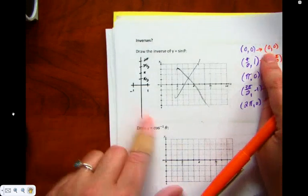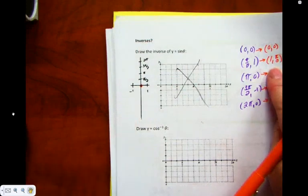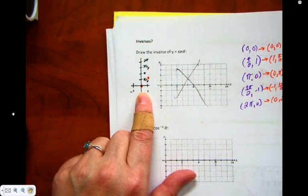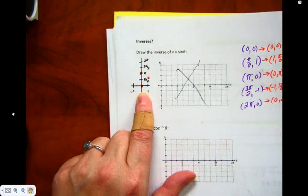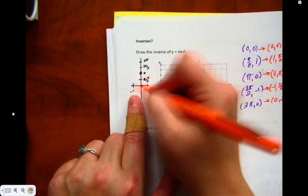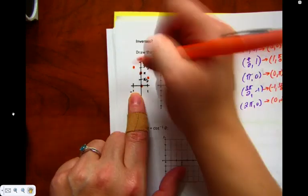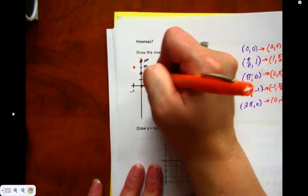So just going in order, zero, zero is still going to be the origin. One, pi on two is one over and pi on two up. Zero, pi is just on the y-axis at pi. Negative one, three pi on two is one to the left and up to three pi on two. And then zero, two pi is right on the axis. And here's our first inverse.